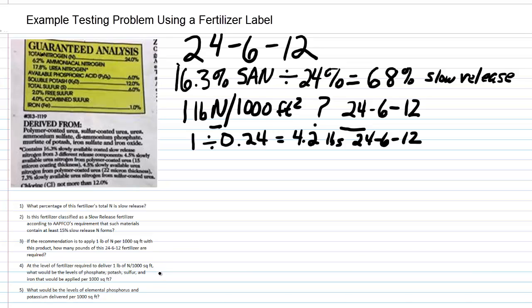Question four: at the level of fertilizer required to deliver one pound of nitrogen per 1,000 square feet — which we determined is 4.2 pounds of product — what will be the levels of phosphate, potash, sulfur, and iron applied per 1,000 square feet? We go back to the label and see that phosphate is 6%, potash is 12%, sulfur 6%, and iron 1%. We're going from product to nutrient, so now we multiply.